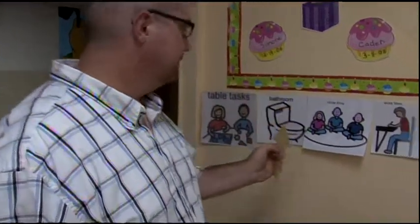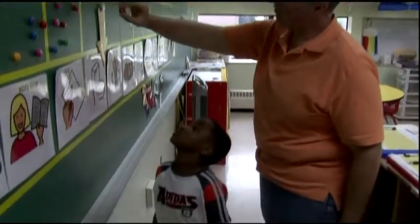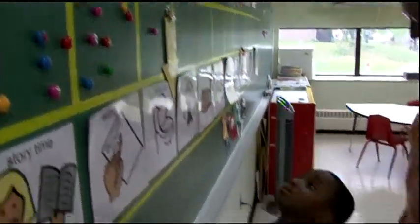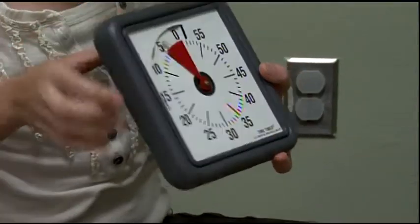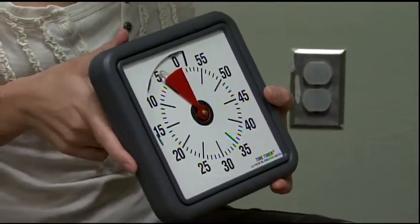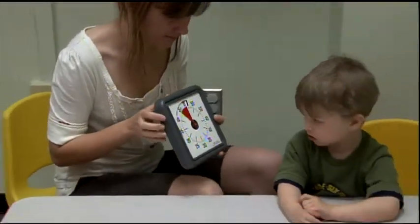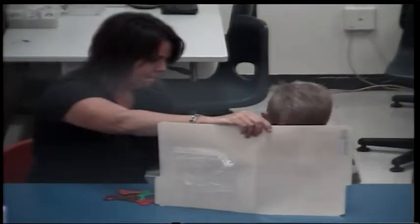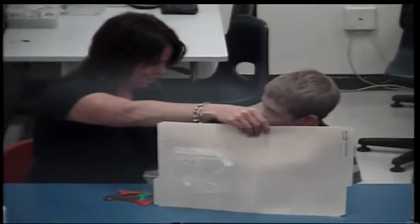Visual schedules can be applied to aid in student transitions across the day or within activities. Token boards can be used as a representation for backup reinforcers or as a method of student self-monitoring. Visual timers can be used as a visual prompt for time to transition, as a way to extend wait time, or for a variety of other purposes. Pictorial or visual prompts can support skill acquisition across a variety of skill areas.